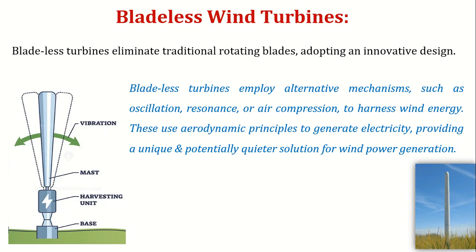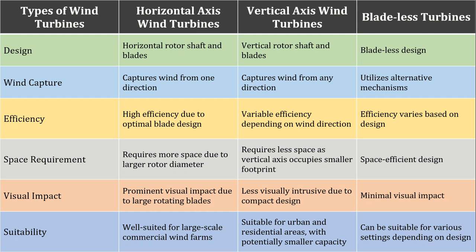In the image, you can see how the mass pole is oscillating, thus converting the mechanical motion into electricity with the help of an alternator. I would like you to review the differences among these three types of turbines in tabular form. This is self-explanatory — please review it.